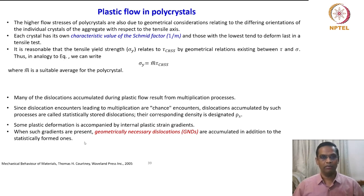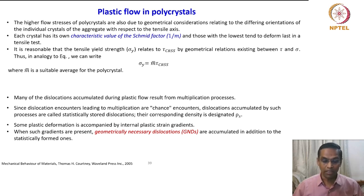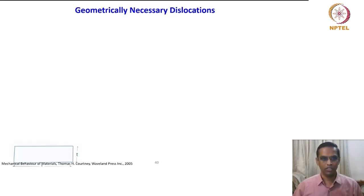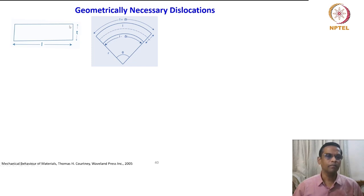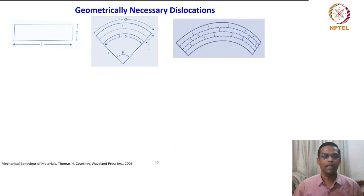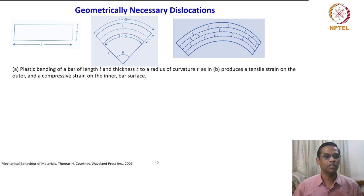Strain gradients are not necessarily created in general plastic deformation — the question is how dislocations are generated. Suppose you take a single crystal of length l and thickness t being subjected to plastic bending. This is what is described: the plastic bending of a bar of length l and thickness t to a radius of curvature r.